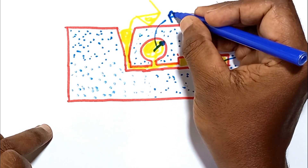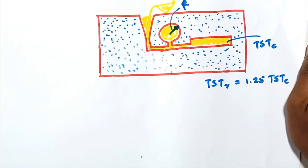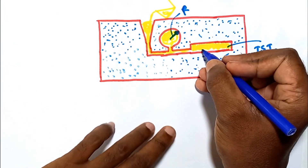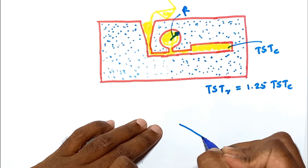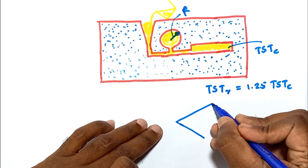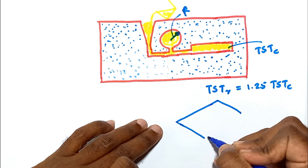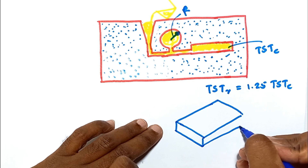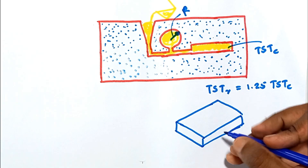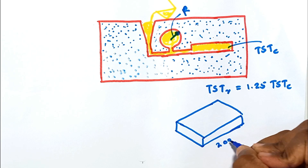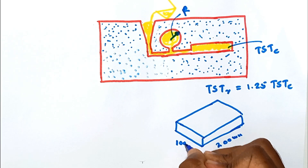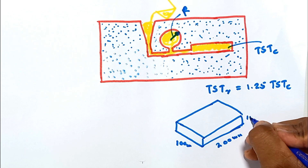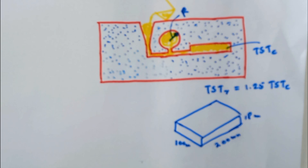The casting product is rectangular plate shaped. Let me draw the diagram for the casting. Its dimensions are given: 200 millimeters in length, 100 millimeters in width, and 80 millimeters in thickness.